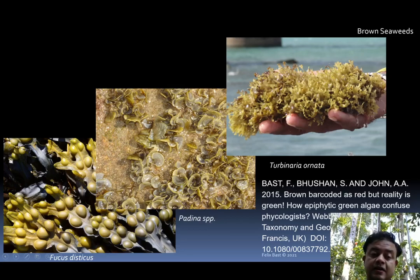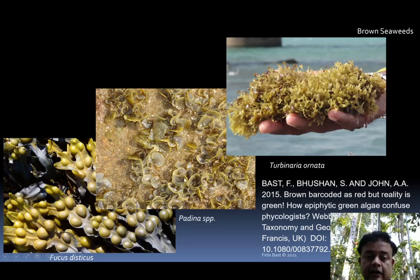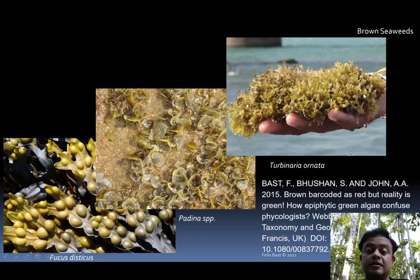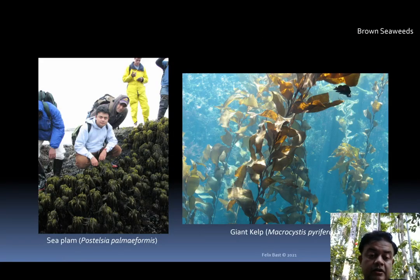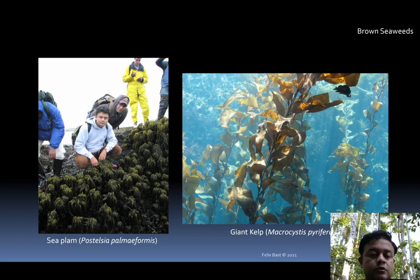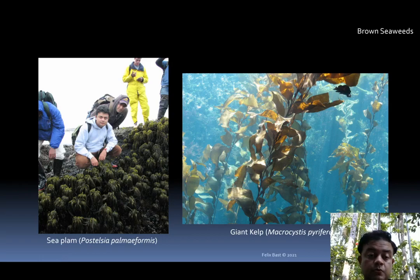Some other members include Fucus diasticus with its pneumatocysts. Fucales is named after the genus Fucus. Padina is very calcareous because of calcium and siliceous deposits on its cell wall. Turbinaria ornata is found on the Indian coast in Tamil Nadu — if you ever go there, you can see this beautiful alga. Sea palm is another one — Postelsia palmiformis — an edible alga used as part of local culinary traditions in a large number of countries including Norway. This is a picture from Vancouver Island, Canada, taken in 2009.